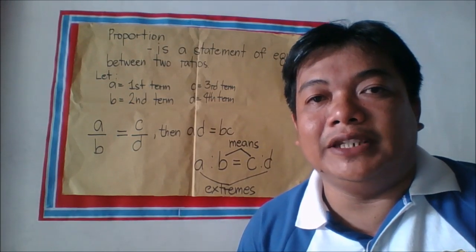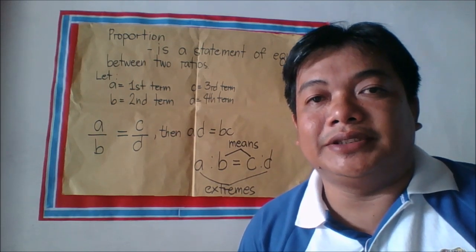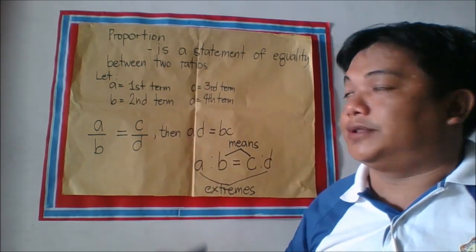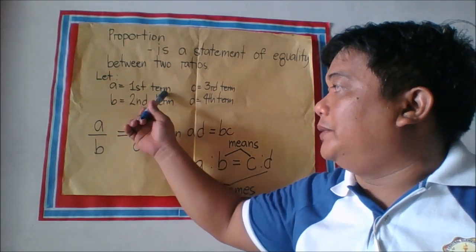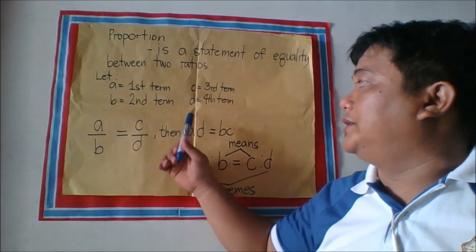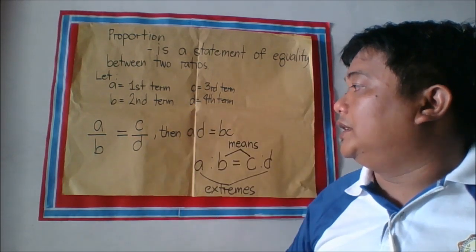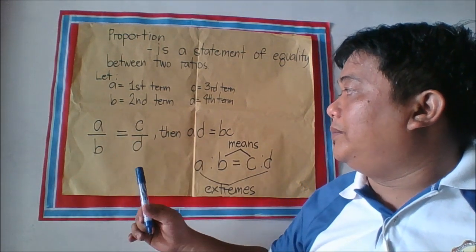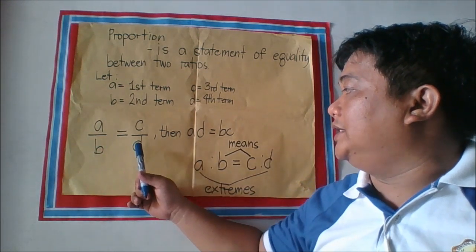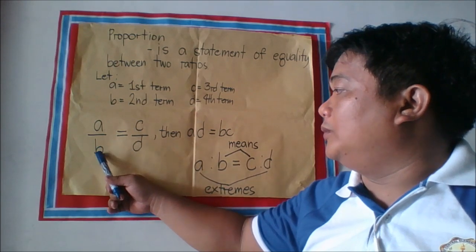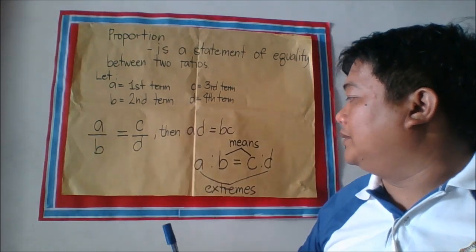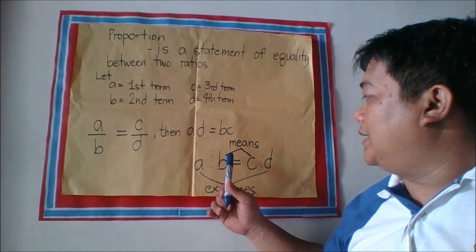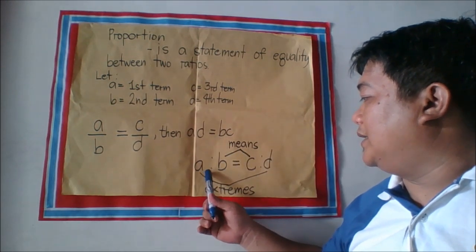Hi guys, welcome back again to our flip classroom. Today we are going to discuss about proportion. Proportion is a statement of equality between two ratios. So for example, let a be the first term, b the second term, c the third term, and d the fourth term. So a is to b is equal to c is to d. The product of the extremes is equal to the product of the means.